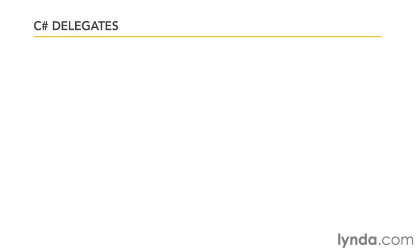The next couple of subjects we're going to look at are fairly advanced: delegates and events. We're going to start with C# delegates, which are sort of like callbacks you may have seen in other languages like JavaScript, Java, C, or C++. A callback function is assigned at runtime, and you can change callback functions while the program is running. Delegates provide that same functionality in C#.